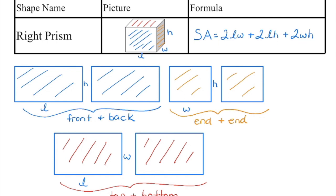In the formula, you basically want to have the length twice, the width twice, and the height twice, each with a different combination: length times width, length times height, and width times height.